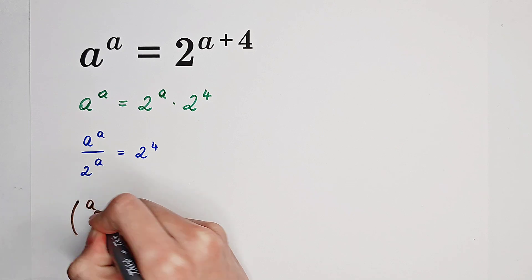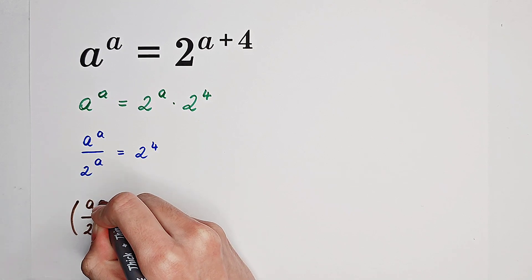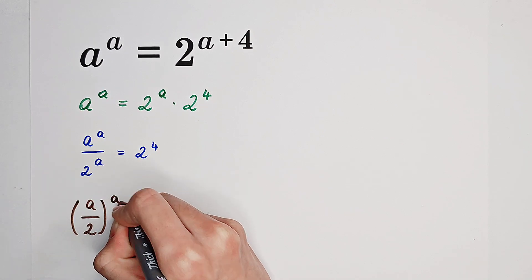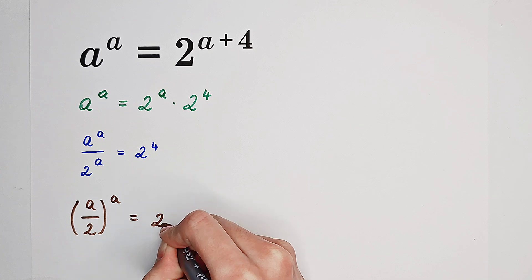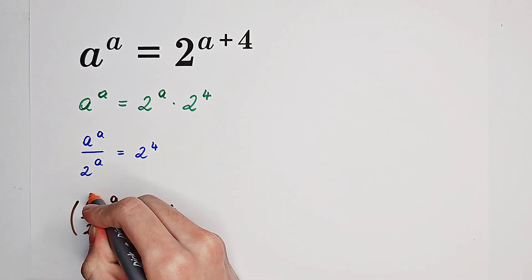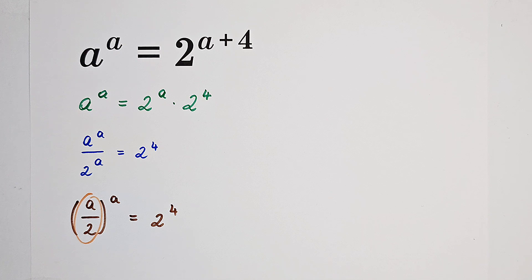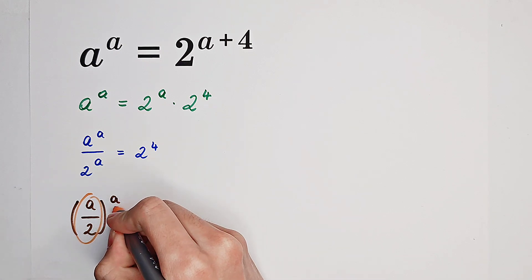Now, it is A over 2 to the power of A equals 2 to the power of 4. Now, look. On the left-hand side, the base is A over 2 and the exponent is A.